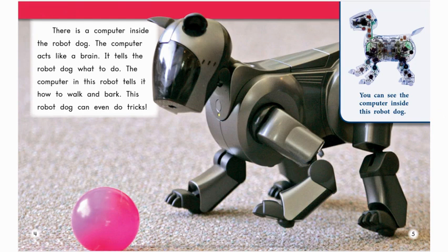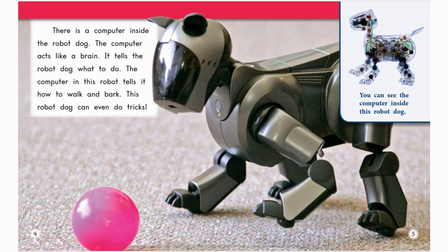Did you know there's a computer inside the robot dog? Let's clap that word — 'computer.' Let's see how many syllables it has: com-pu-ter. Did you hear three? That's correct — three syllables. Find the word 'computer' and say it. It helps to break words up like that when you're trying to spell them — you do one part at a time.